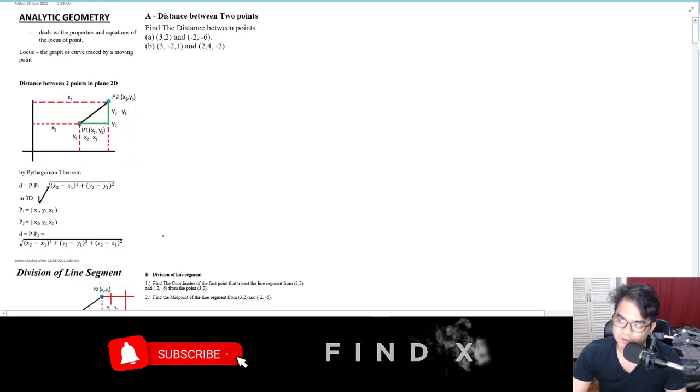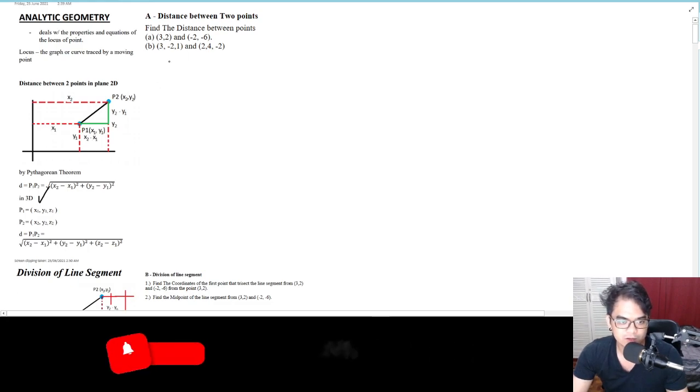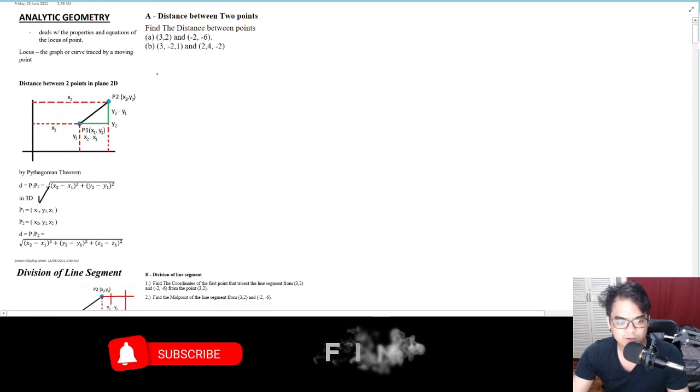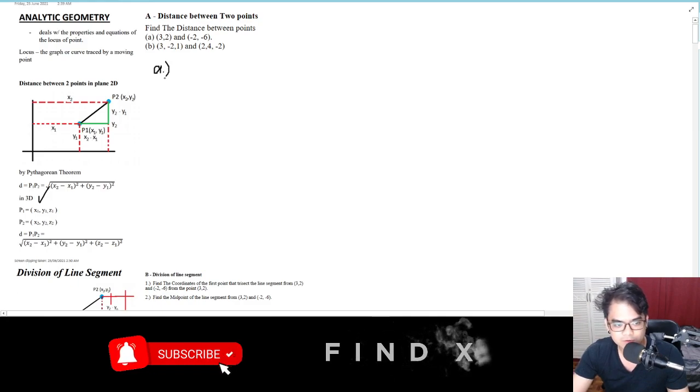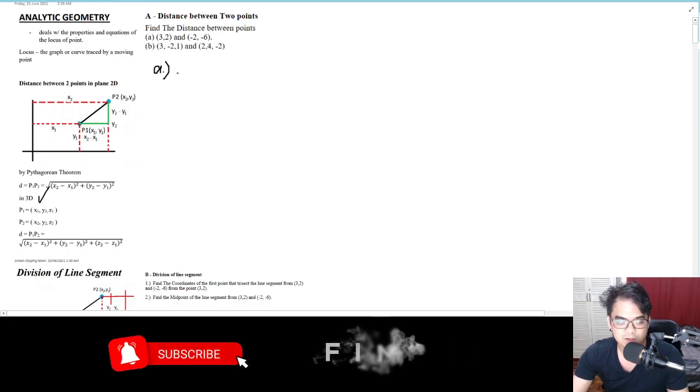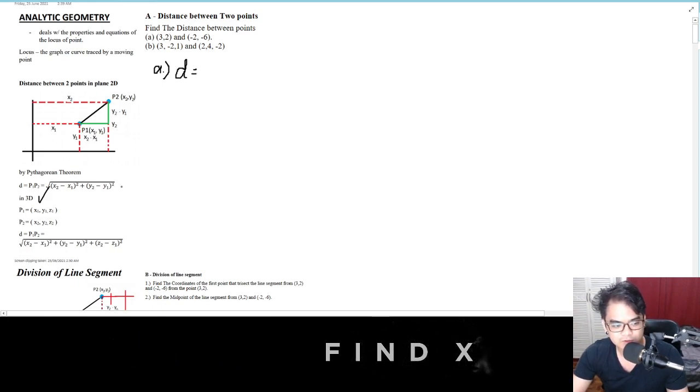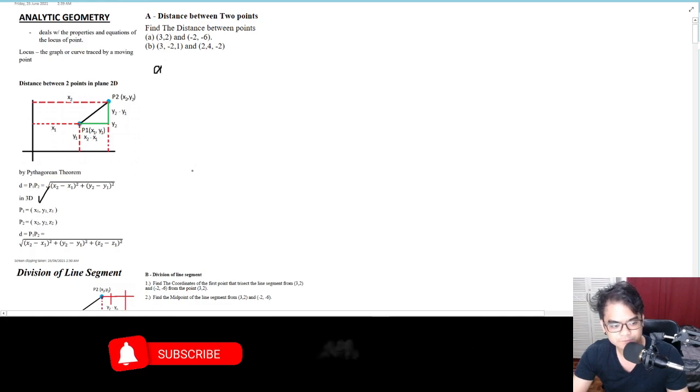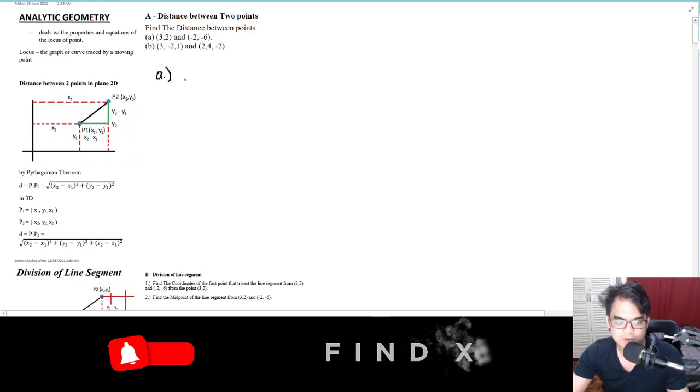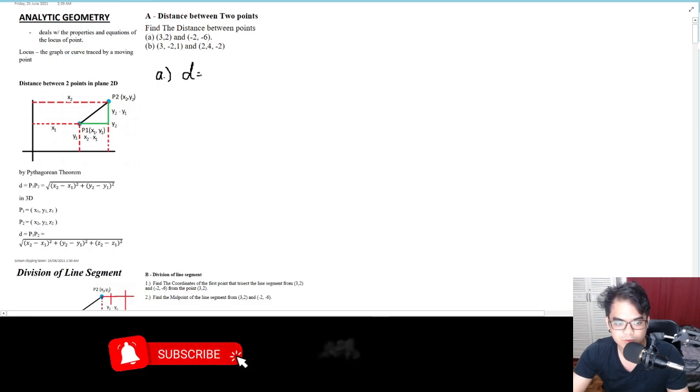Without further ado, let's move on to the sample problems. Find the distance between points (3, 2) and (-2, -6). To find d, all you have to do is just follow this formula. Following the formula, you'll have d equals...